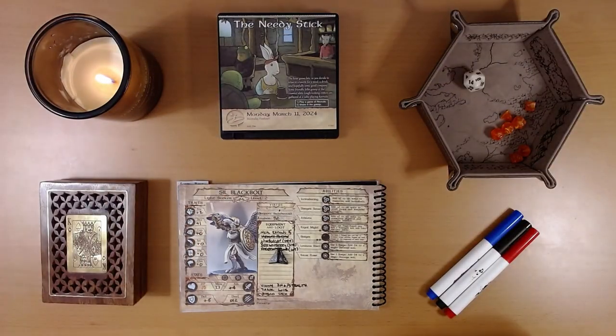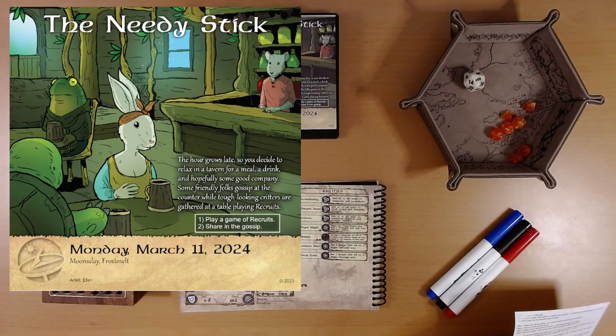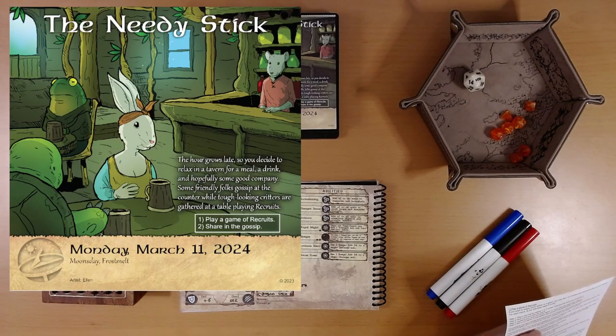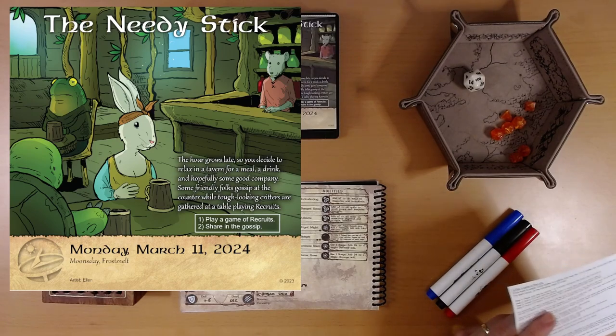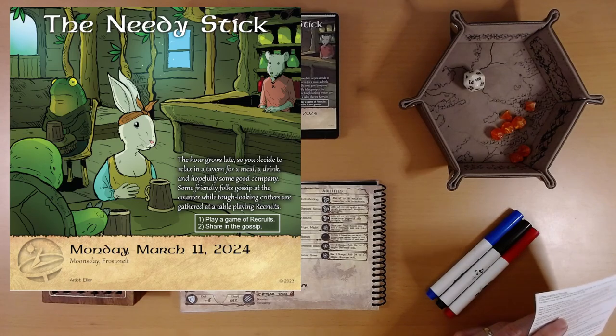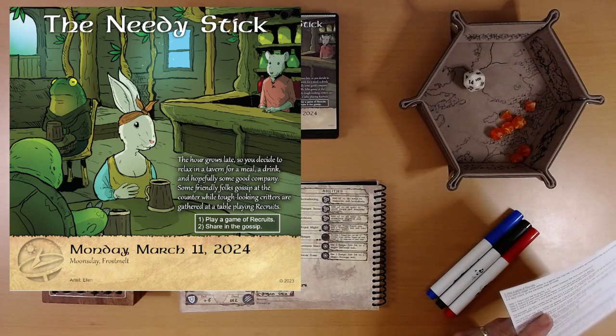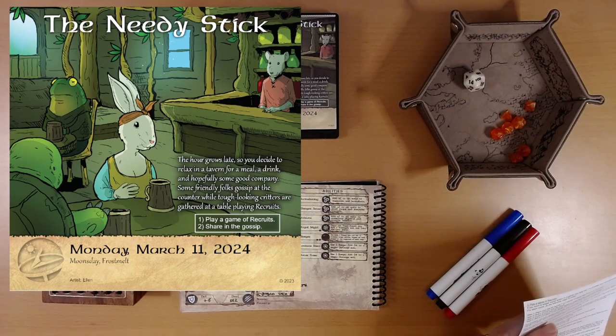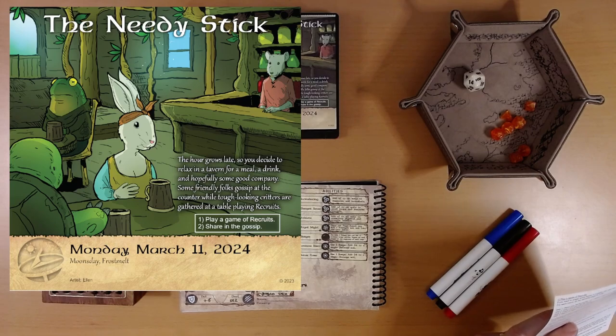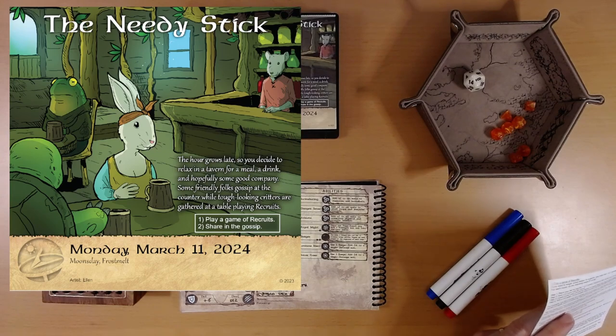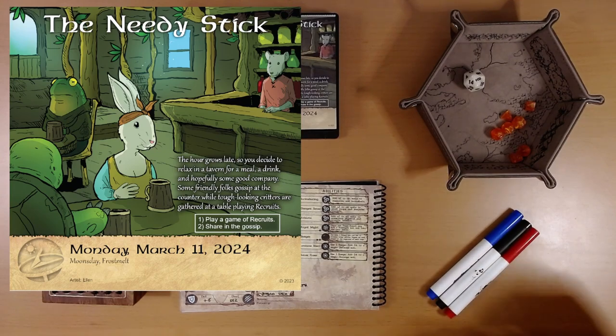The needy stick. The hour grows late, so you decide to relax in a tavern for a meal, a drink, and hopefully some good company. Some friendly folks gossip at the counter while tough-looking critters are gathered at a table playing recruits. One, play a game of recruits. Two, share in the gossip. I love this frog. And there is a pickpocket icon on this page.